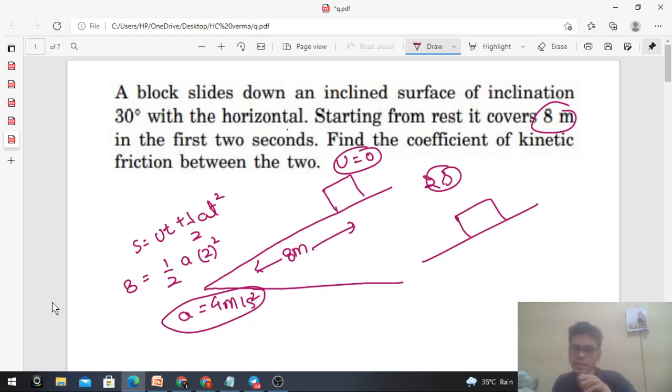This is g sin theta when friction is not present. If friction is present, you have to subtract mu into cos theta.